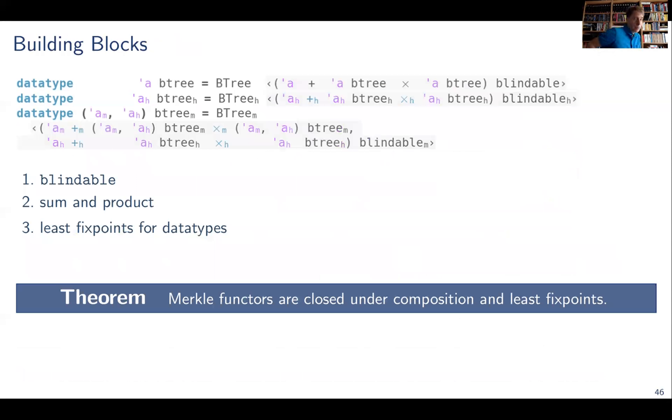In order to do that, we need a few building blocks. So if we look at what we have here, we have sums with products, we've got blindable, and we've got recursion. And we've developed a theory for all of that. The details are in the paper. But what we get is a theorem that we proved that Merkle functors, and the Merkle functor is a functor that satisfies a generalization of the interface that I've shown you. They're closed under composition and least fixed point. That means, it contains blindable sum and product. That means whatever you can build from blindable sum products and data types built from those is a Merkle functor and you get a construction for free.